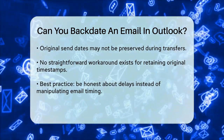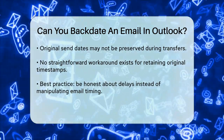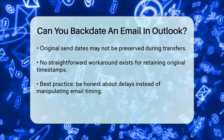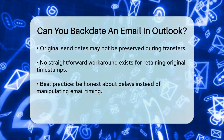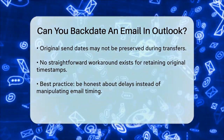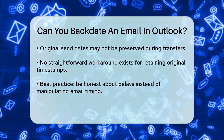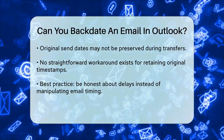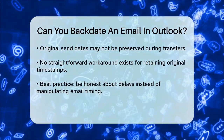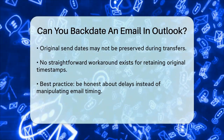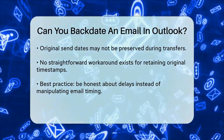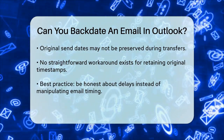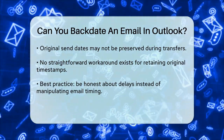In summary, while there are some creative workarounds, backdating an email in Outlook in a way that convincingly changes all relevant timestamps is not feasible. The best approach, especially in personal or professional contexts, is often to be honest and transparent about any delays or oversights, rather than attempting to manipulate the email's timing.